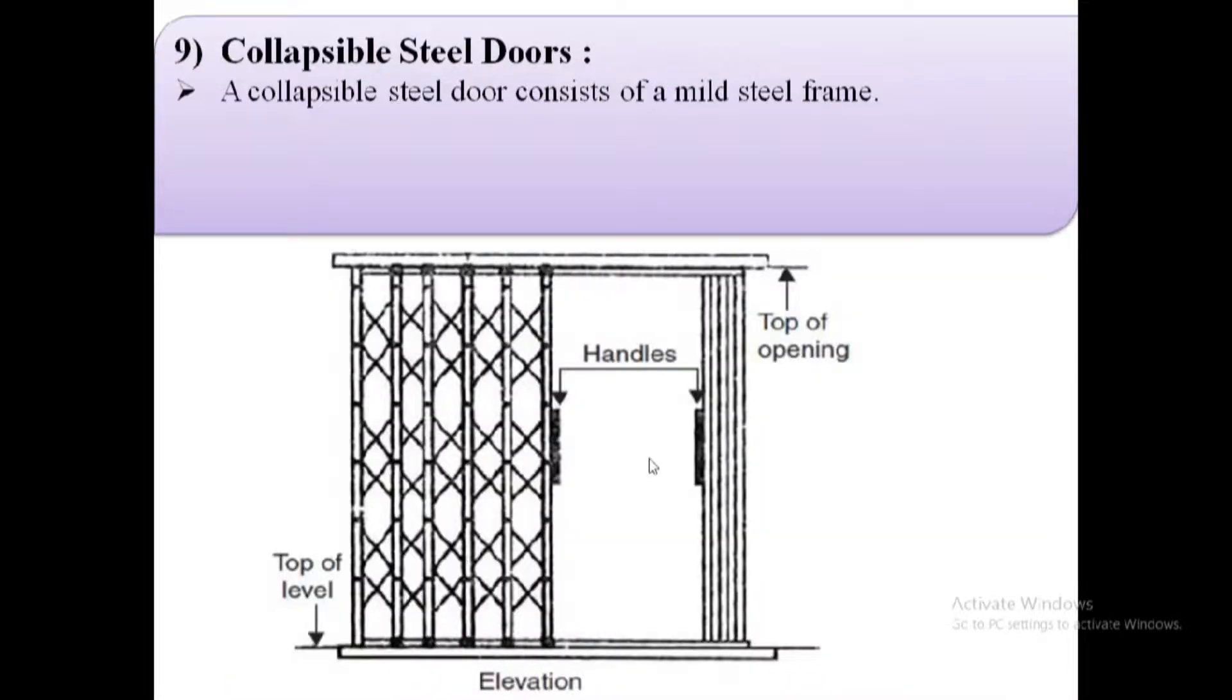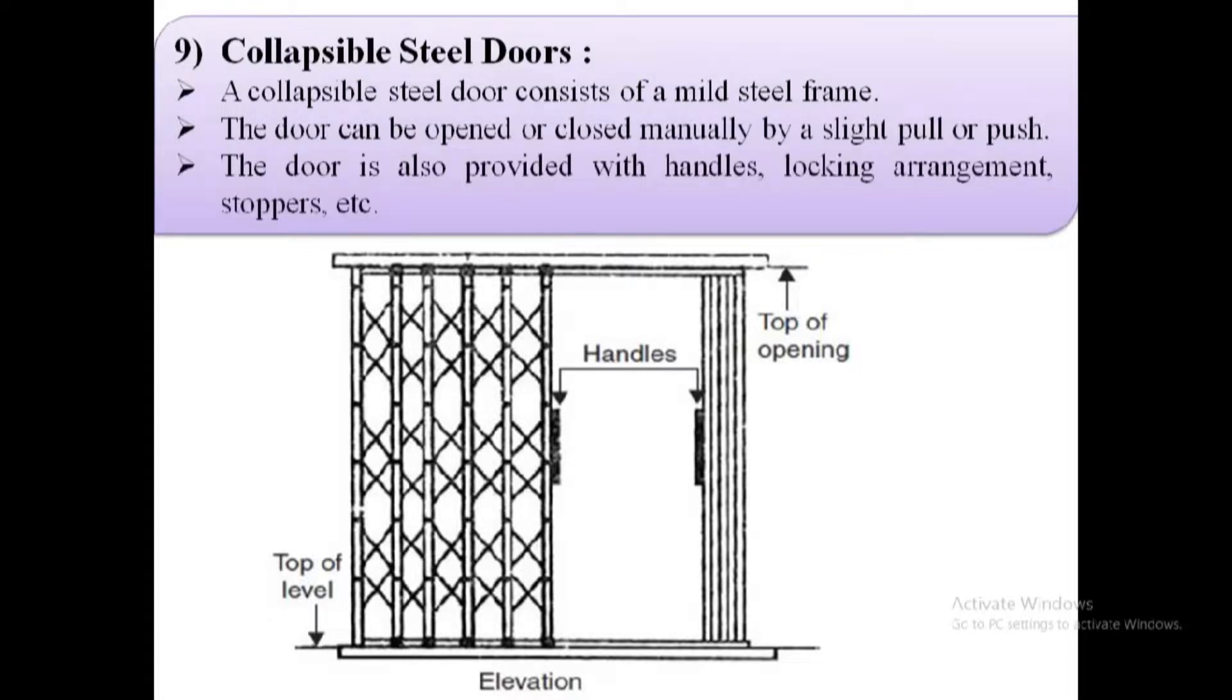Collapsible steel doors. The shutter operates between two iron rails of T-shape, one fixed to the floor and other to the lintel. This door is provided with handles, locking arrangements, and stoppers.